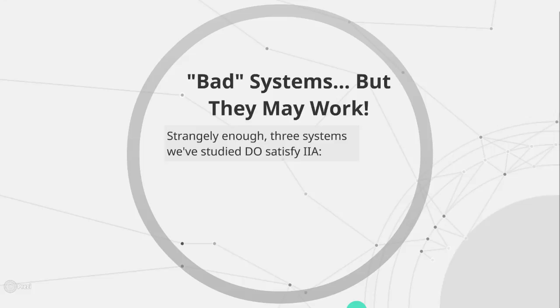More troublingly, some of the systems that do satisfy this seemingly nice criterion are actually some of the systems that we classified as bad. Dictatorships satisfy this IIA criterion, as does imposed rule. So having a declared winner either by a single voter or by the system itself — adding or removing an irrelevant candidate won't change the outcome. A system that we wouldn't expect to satisfy it, but interestingly enough does, is the minority rule, where adding or removing an irrelevant candidate won't change the preference order between two other candidates.